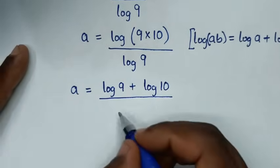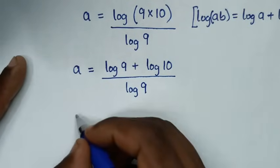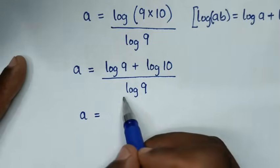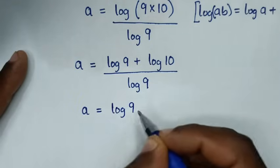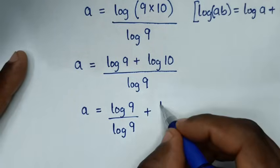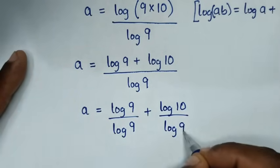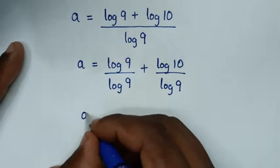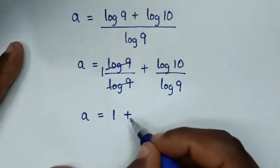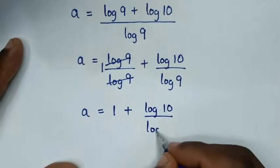Then in the next step, we divide log of 9 into each part of the numerator. So it becomes log of 9 over log of 9 plus log of 10 over log of 9. Log of 9 divided by log of 9 is 1, so it will be 1 plus log of 10 over log of 9.